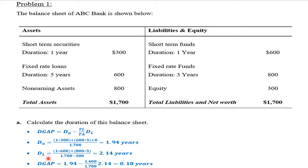Regarding the duration of liabilities, it is similar: the amount times the duration in years. So 600 times 1 plus 800 times 3. Make sure not to include the equity because it is not part of liabilities. Divided by the total liabilities, which is 1,700 minus 300 (equals 1,400). The duration of liabilities equals 2.14 years.